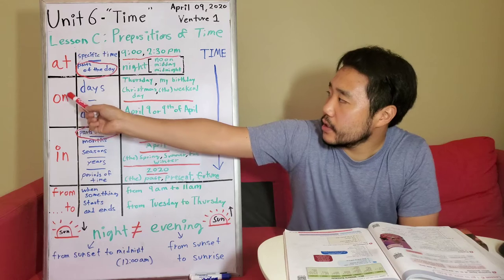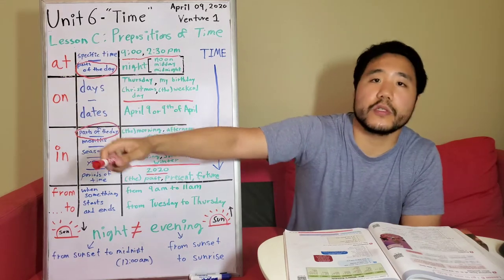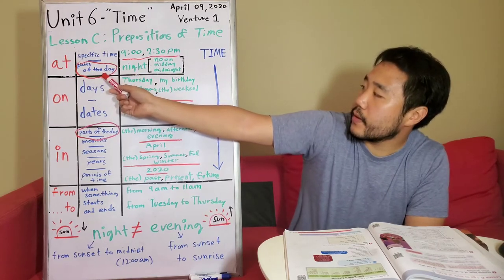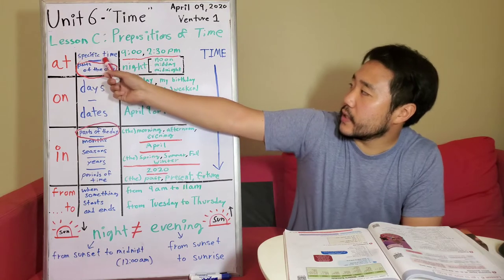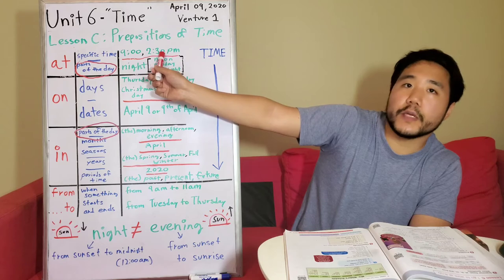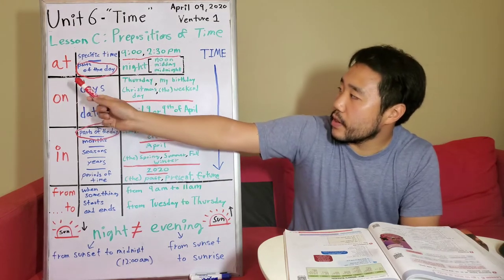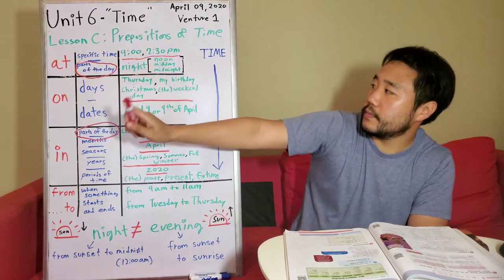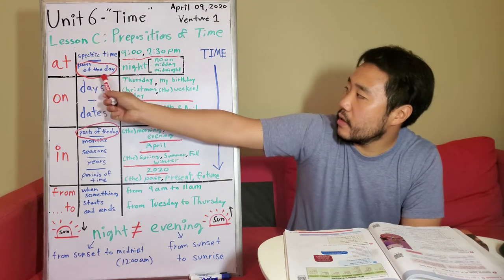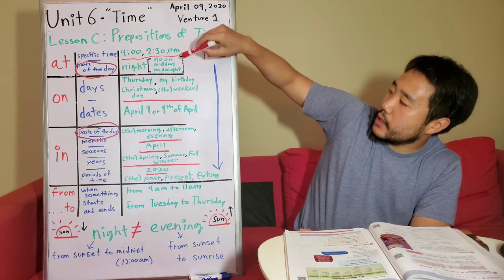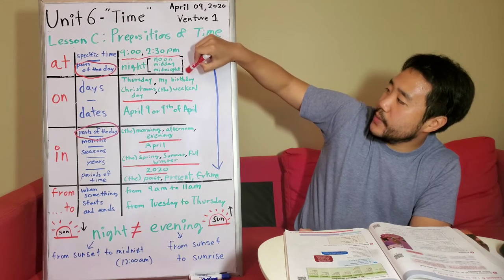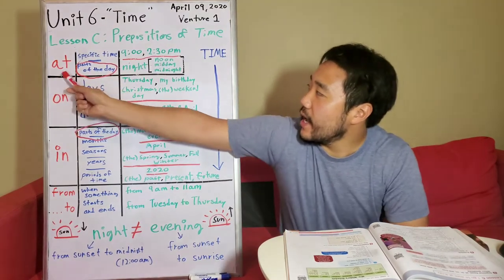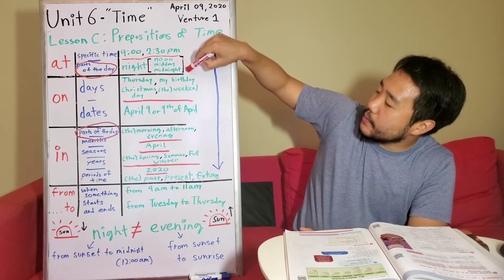The preposition "at" is used for specific time and parts of the day. Examples for specific time: 9 o'clock, 2:30 p.m. With "at," you say: at 9 o'clock, at 2:30 p.m. Examples for parts of the day are: night, noon, midday, midnight. So with "at," you say: at night, at noon, at midday, at midnight.